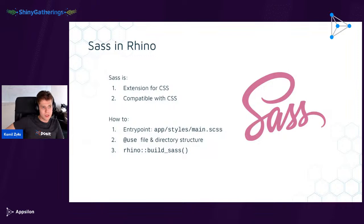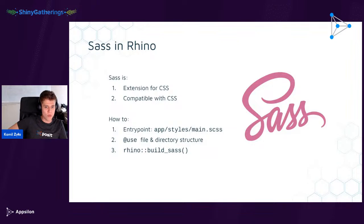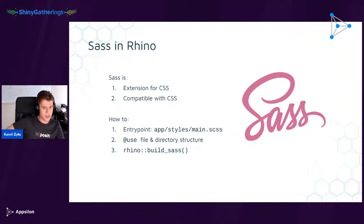SASS is an extension for CSS that is compatible with CSS — you can start writing as if you were writing plain CSS but it has cool features you can learn on the go. In Rhino, to write custom styling go to the app/styles directory where you'll find the main.scss file. It's encouraged to split your styles into multiple files and use directory structure, importing them with the @use directive. Once styles are defined, call rhino::build_sass() to build it into a minified CSS file placed in app/static, included automatically.